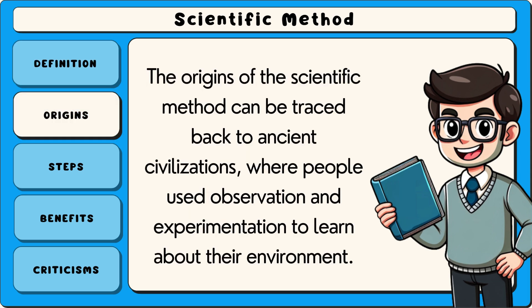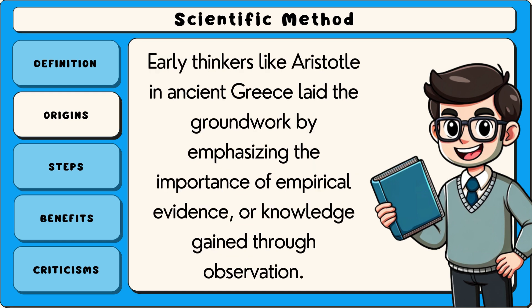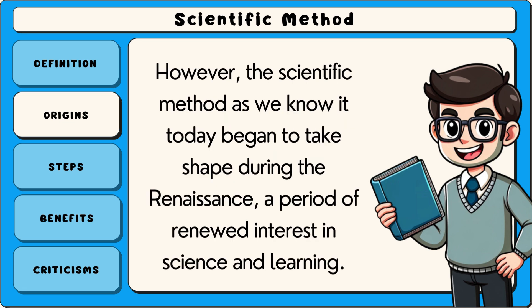The origins of the scientific method can be traced back to ancient civilizations, where people used observation and experimentation to learn about their environment. Early thinkers like Aristotle in ancient Greece laid the groundwork by emphasizing the importance of empirical evidence — all knowledge gained through observation.